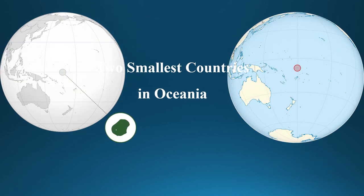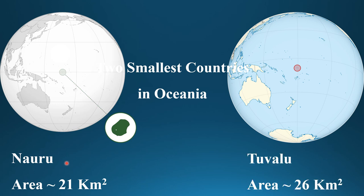The two smallest countries in Oceania are Nauru, with an area of 21 square kilometers, and Tuvalu, with a total area of 26 square kilometers. These are island countries in Oceania.